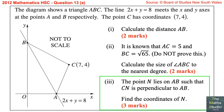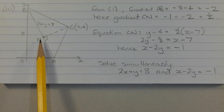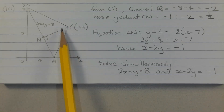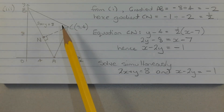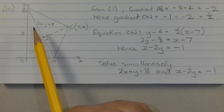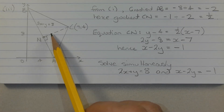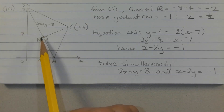Part 3. The point N lies on AB such that CN is perpendicular to AB. Find the coordinates of N. To find the coordinates of point N, given that CN is perpendicular to AB, we need to find the gradient of CN first. Then we can find the equation of CN. We have the equation of AB, and after finding the equation of CN we can solve simultaneously to find the coordinates of the point of intersection.